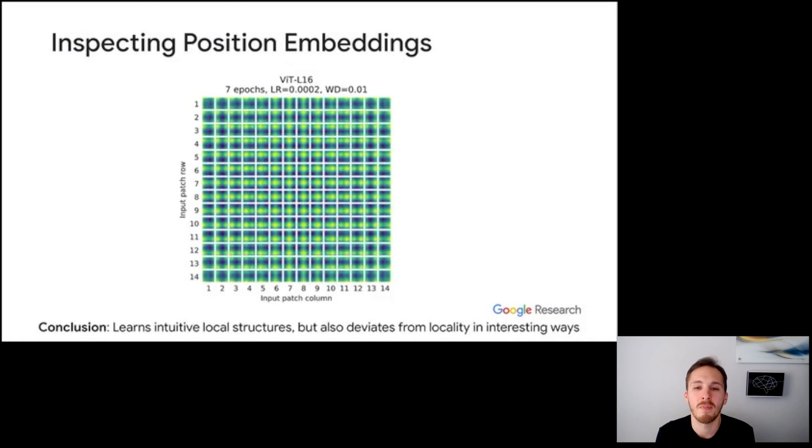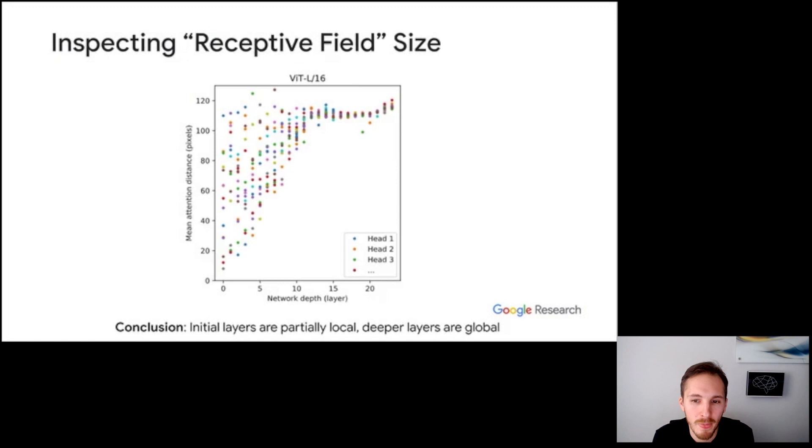Now let's try to gain some insight into what the model learned. We first look at the position embeddings. We visualize the cosine similarity between the position embeddings learned at different locations. To this end, each small image corresponds to taking a single patch and computing the cosine similarity of this patch's position embedding to all the others. And different small images use different query patches. As can be seen from this visualization, the model has clearly learned some local structure, as evidenced by these yellow blobs that show that each patch is most similar to patches nearby. But the structure is not completely local. For instance, in some cases, there are these two or four blob structures. That means that the position embeddings are not only similar locally.